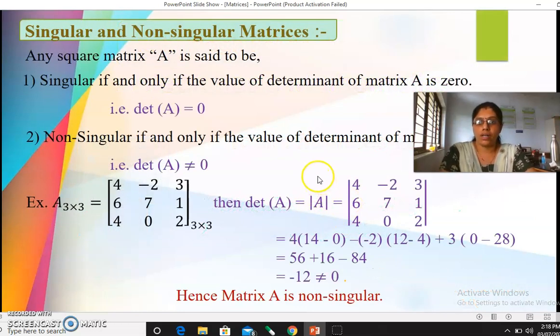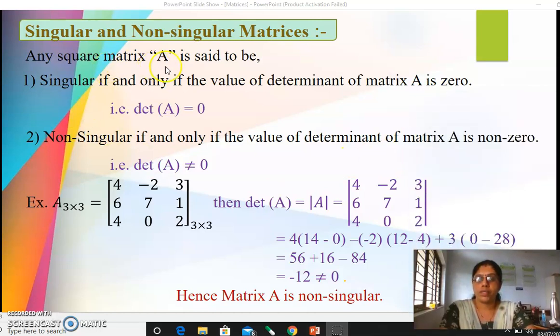Let's first see singular and non-singular matrices. What is meant by singular matrix? Any square matrix A is said to be singular if and only if the value of determinant of matrix A is 0.